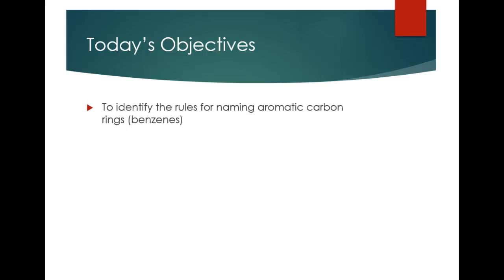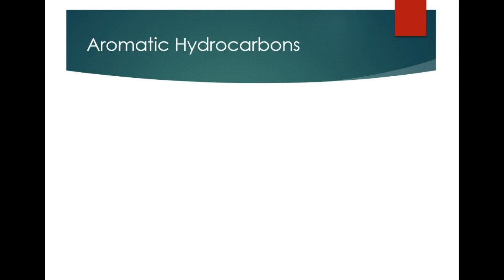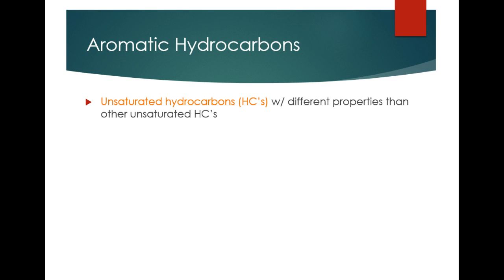Hey and welcome back. Today's objectives are to identify the rules for naming aromatic carbon rings called benzenes. Let's talk about aromatic hydrocarbons and see exactly what that means. First of all, they are unsaturated, which means they contain double bonds or triple bonds. What makes them so special is they have different properties than other unsaturated hydrocarbons — particularly, they tend to be highly stable.